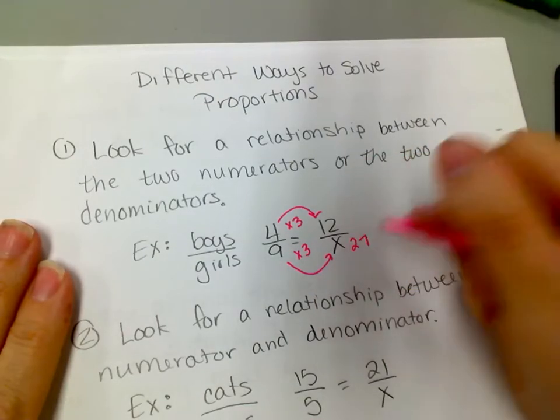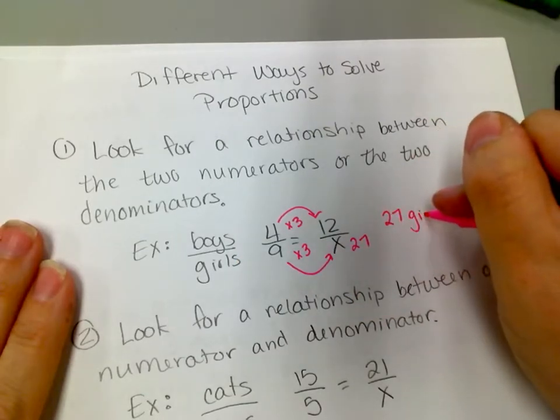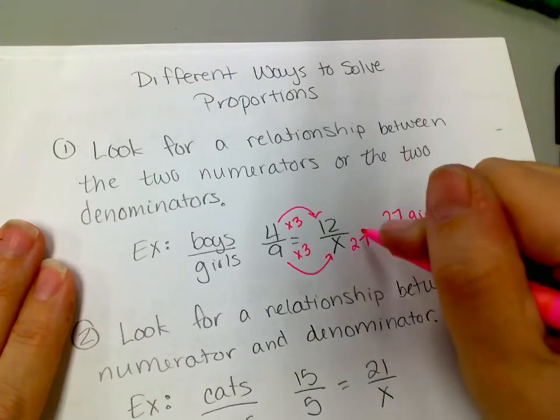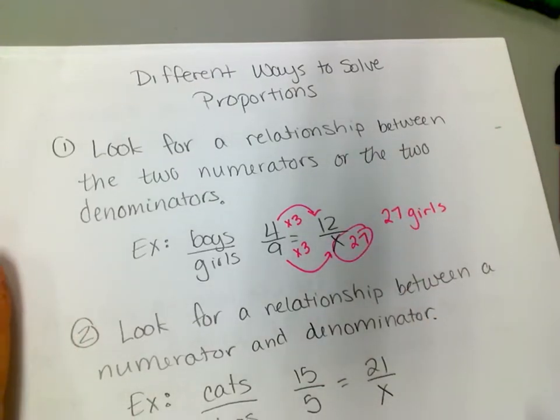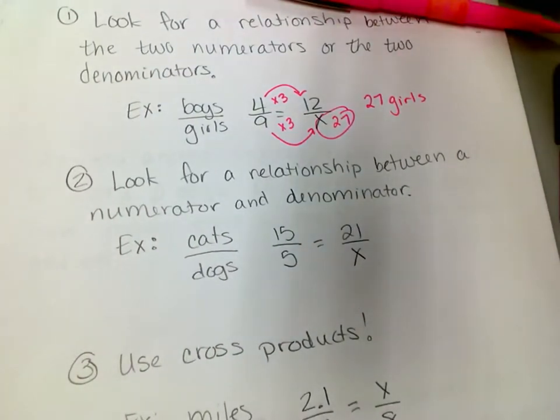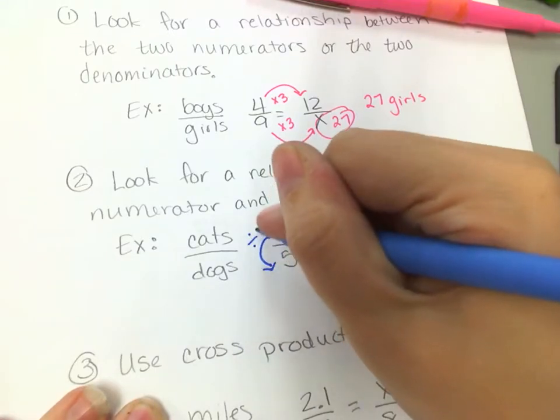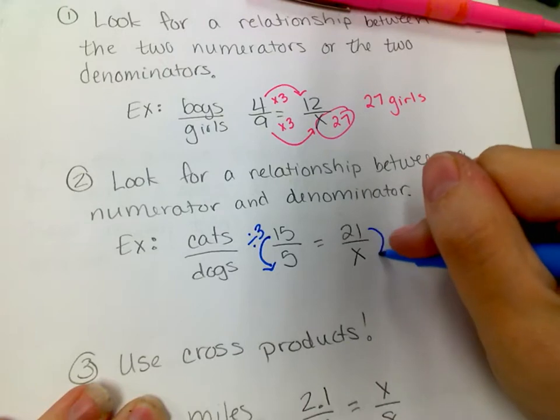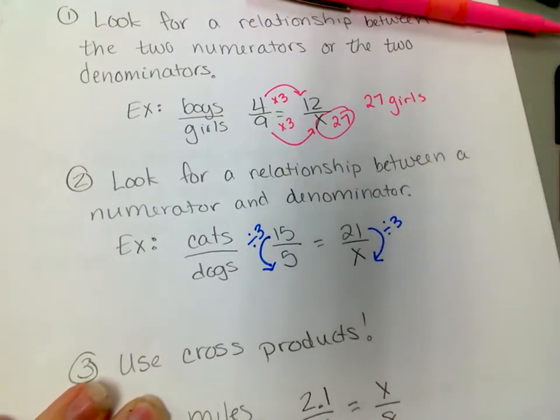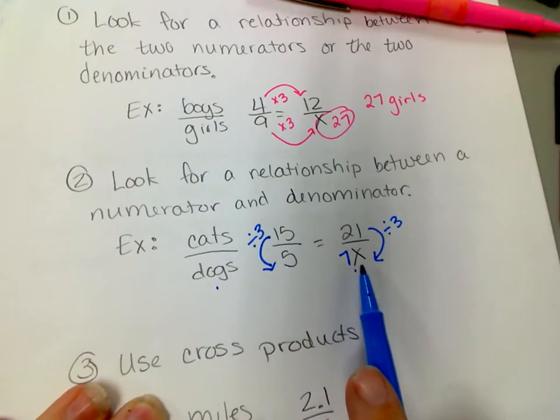Because it's like an equivalent fraction except it's a ratio, so they have to be equal to each other. So that would be 27, and since this is talking about boys to girls, that would be my answer: 27 girls. Okay, my answer wouldn't be 12 over 27. This part is my actual answer. Another way you could do it is to look for a relationship between the numerator and denominator of the ratio when you set it up as a fraction. So if I look, I can see that from 15 to 5 that's dividing by 3. So that means I'm going to do the same thing here, dividing by 3, and 21 divided by 3 is 7. So if I'm talking cats to dogs, that would mean I was solving for how many dogs, so that would be seven dogs.